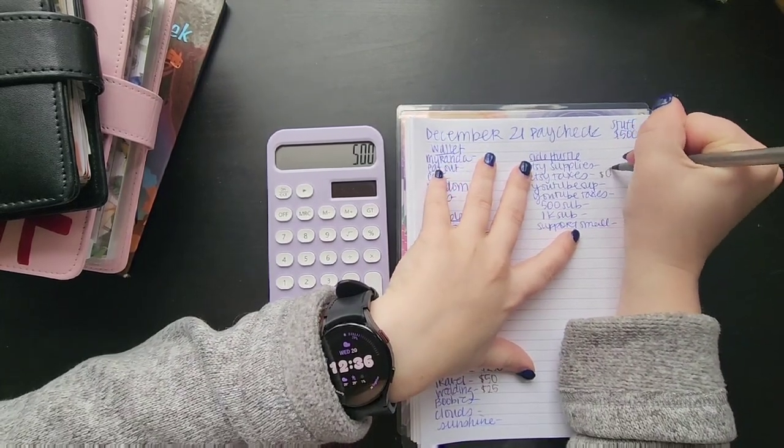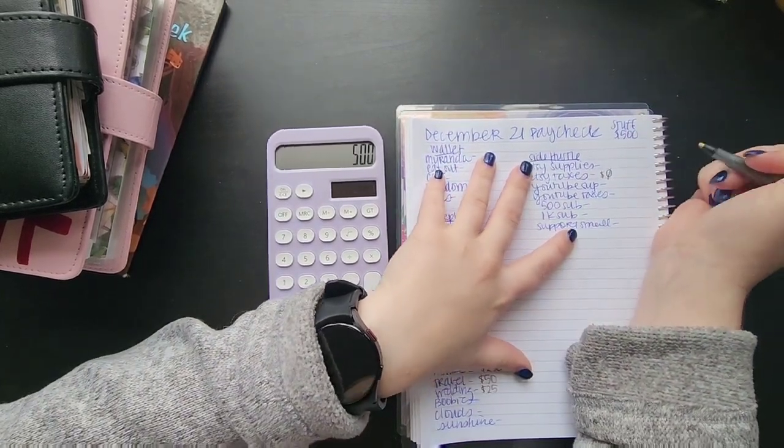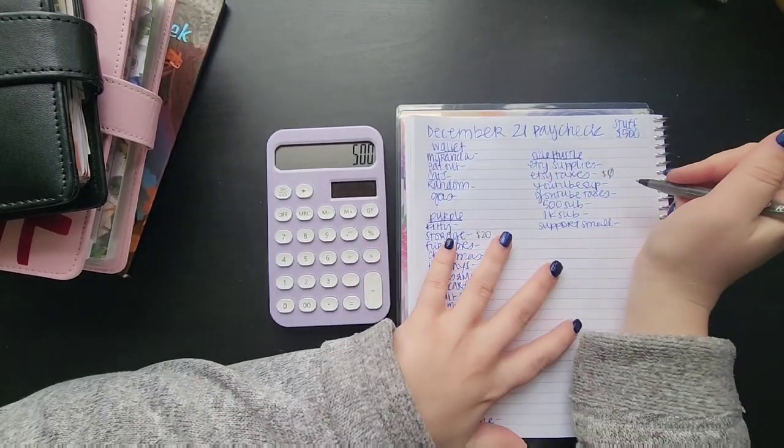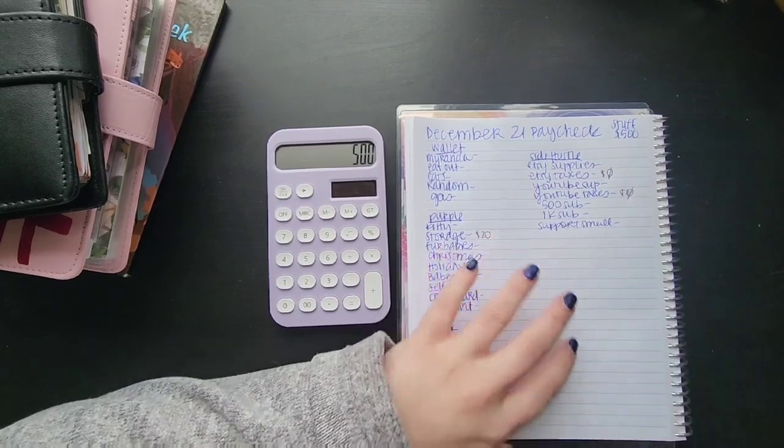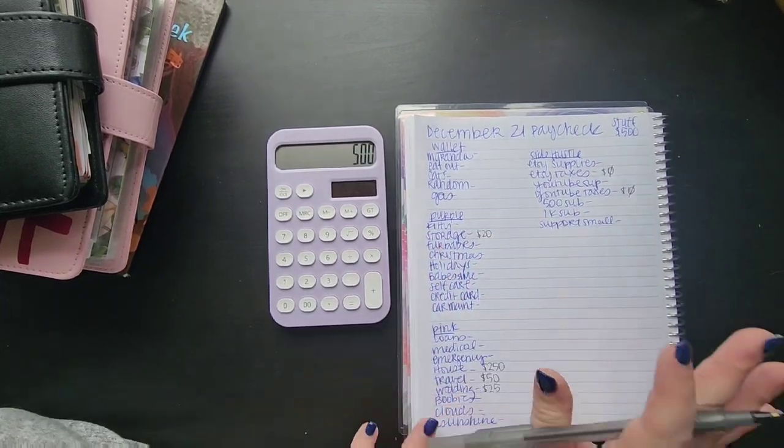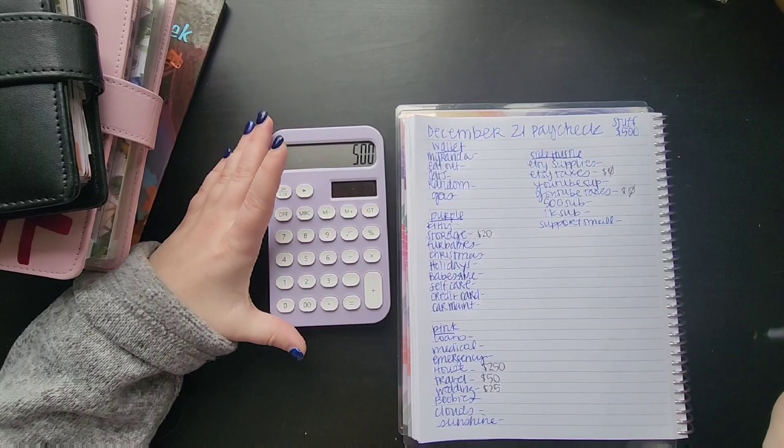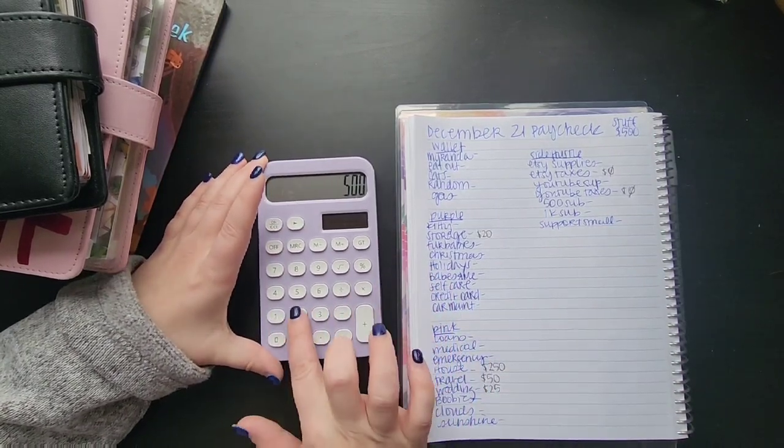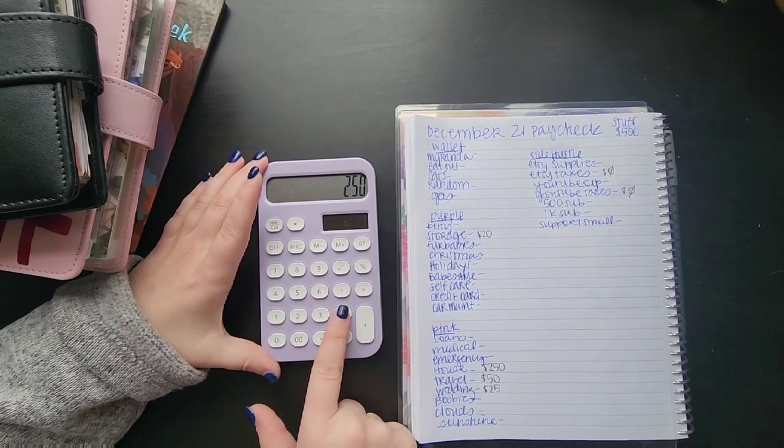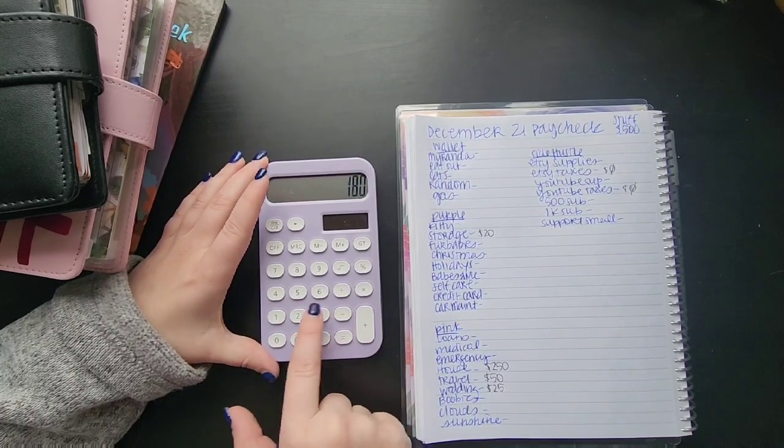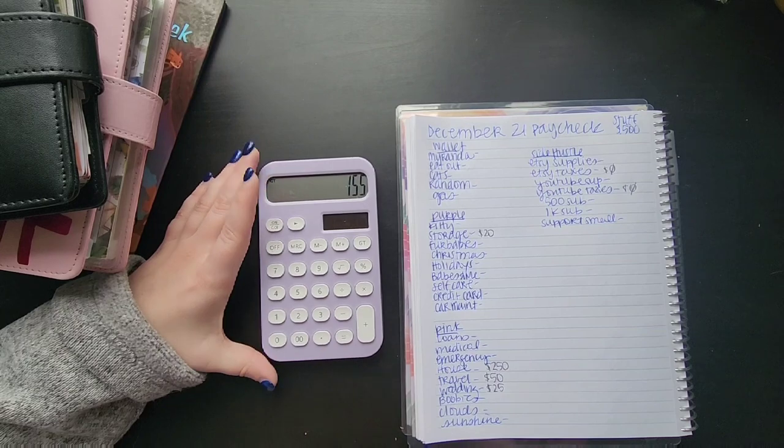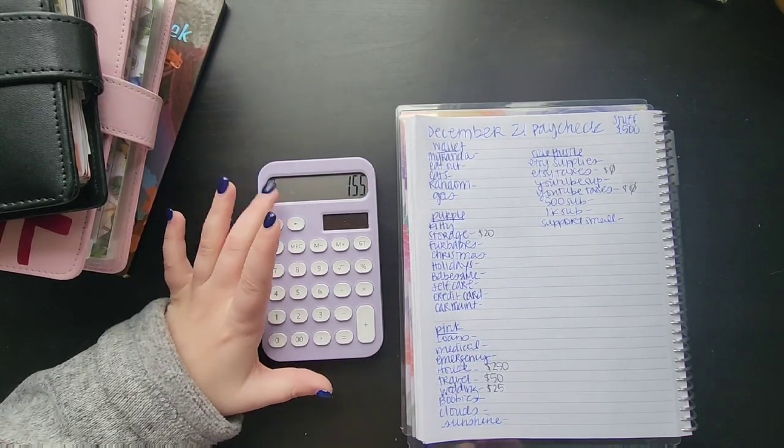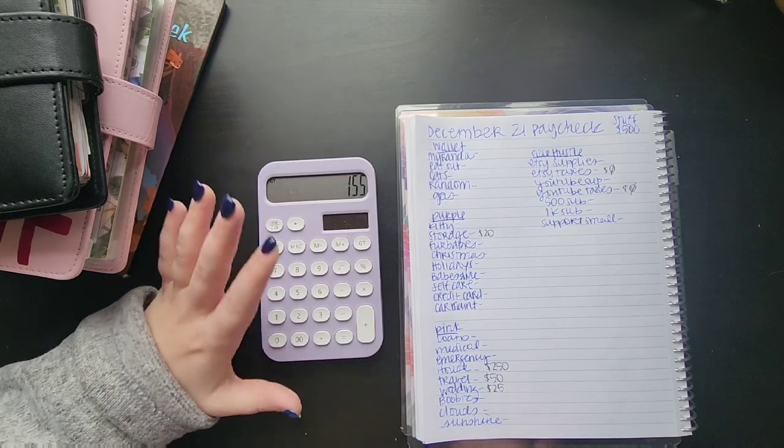Travel always gets 50, my sister's wedding always gets 25. Etsy taxes is getting nothing this time because there's not an etsy paycheck included in this, and YouTube taxes also doesn't get anything because I do not get paid from YouTube yet. So 500 minus 20 minus 250 minus 50 minus 25.